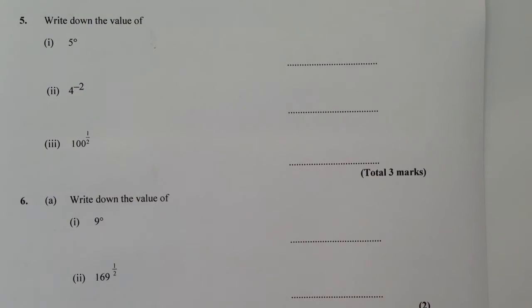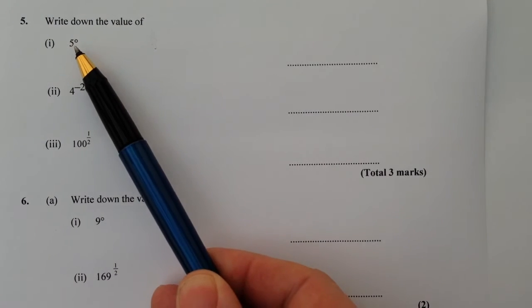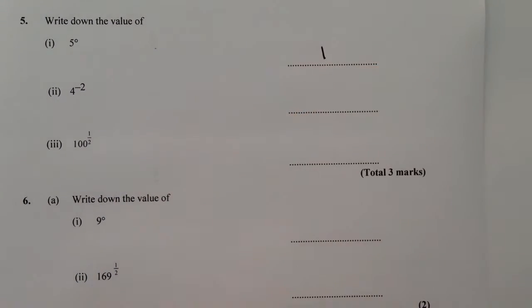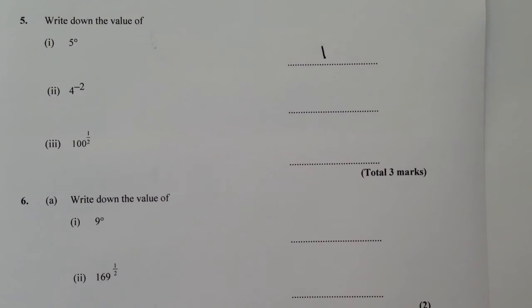So the first one is any number where it's got an indice to the value of zero is equal to one. It doesn't really matter what that number is. Providing it's got a fractional index of zero, it's still going to be one.